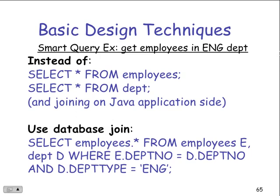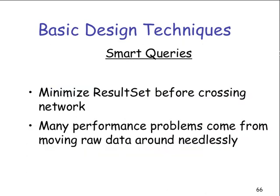There's no way to predict all these techniques, but the goal is: how can I make the fewest number of SQL statements, and how can I make them as powerful as possible to get just the information I want? If I queried all students, that query would probably take four or five minutes and I'd have all this data to sort through when all I really want is one student. Minimize the result set before crossing the network.